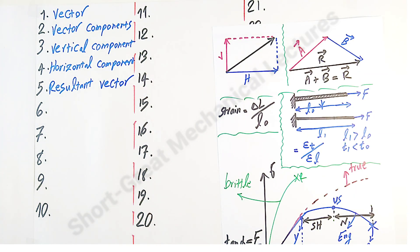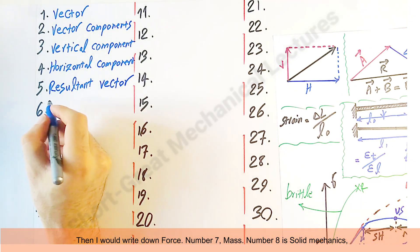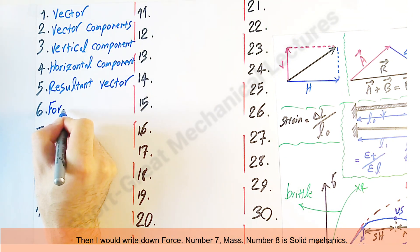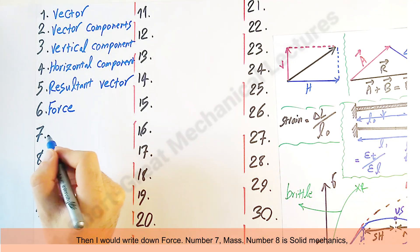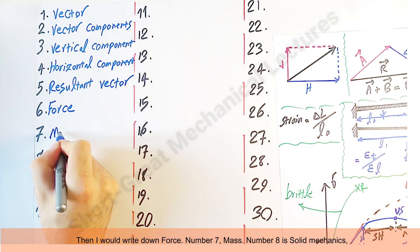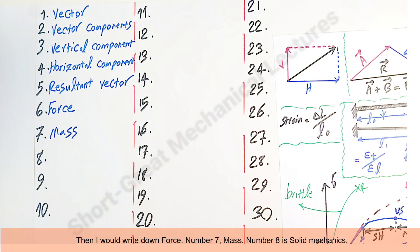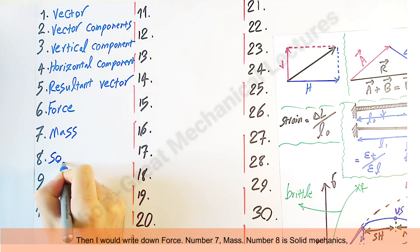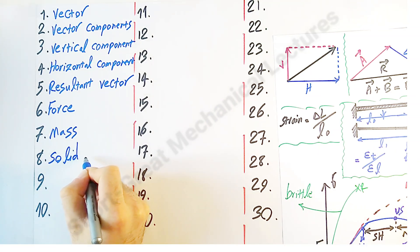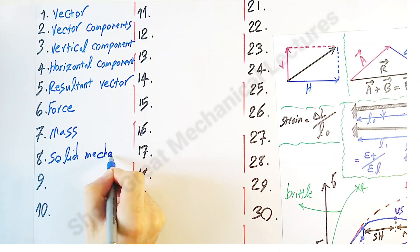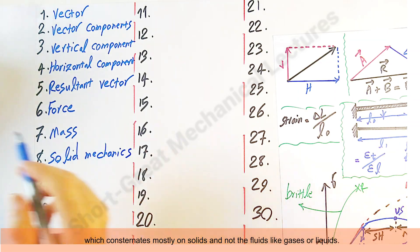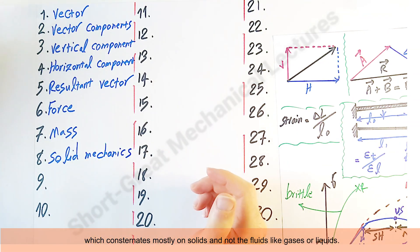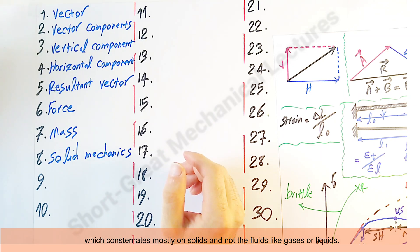Then I would write down 'force.' Number seven: 'mass.' Number eight is 'solid mechanics' — mechanics which concentrates mostly on solids and not fluids, like gases or liquids.